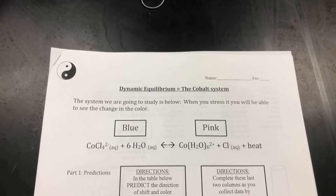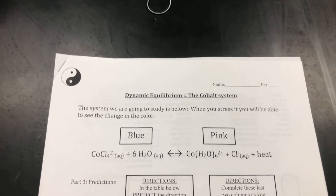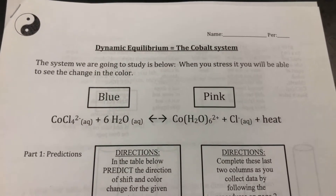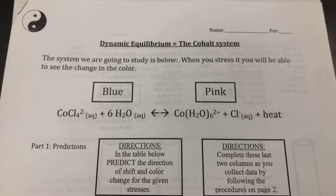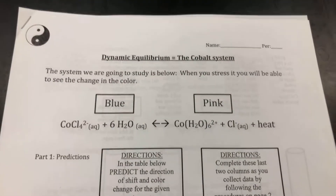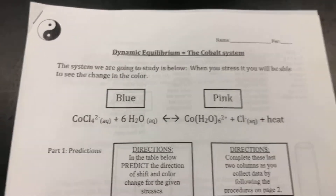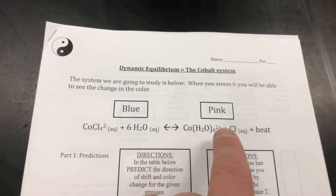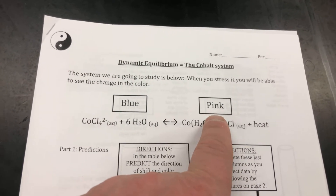Welcome to the Dynamic Equilibrium Cobalt System Lab. We are going to be looking at this reaction, which is very complex, but we're really looking at the equilibrium of it. Is it going to shift to the reactant side, which will make it look blue, or are we going to shift to the product side, which is pink?